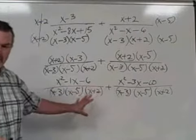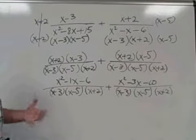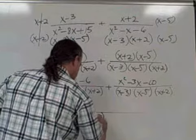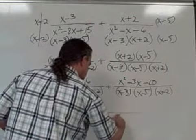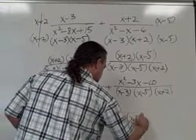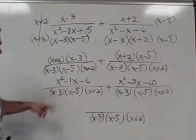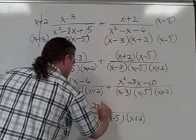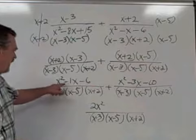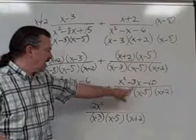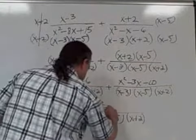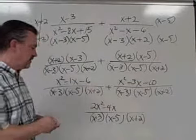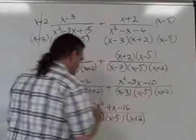Now we can add those two numerators and put the answer over the common denominator. x squared plus x squared gives us 2x squared, minus 1x plus minus 3x is minus 4x, minus 6 plus minus 10 is minus 16.